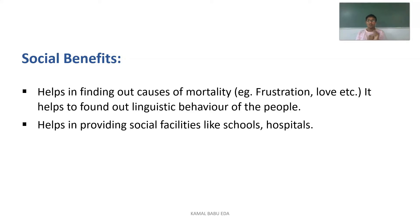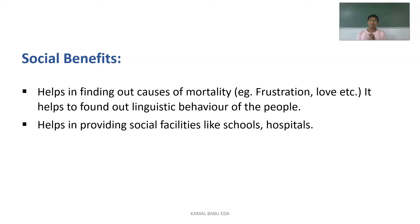Coming to the social benefits: it helps us mainly in finding out the causes of mortality — why people are dying. It helps us find out the linguistic behavior of the people and helps in providing facilities such as schools and hospitals. When you have data about a community of 10,000, 20,000, or 30,000 people, you can assess health requirements, food costs, food production needs, hospitals, schools, and whether homes or roads need to be constructed. You can then form a proper plan for that community.